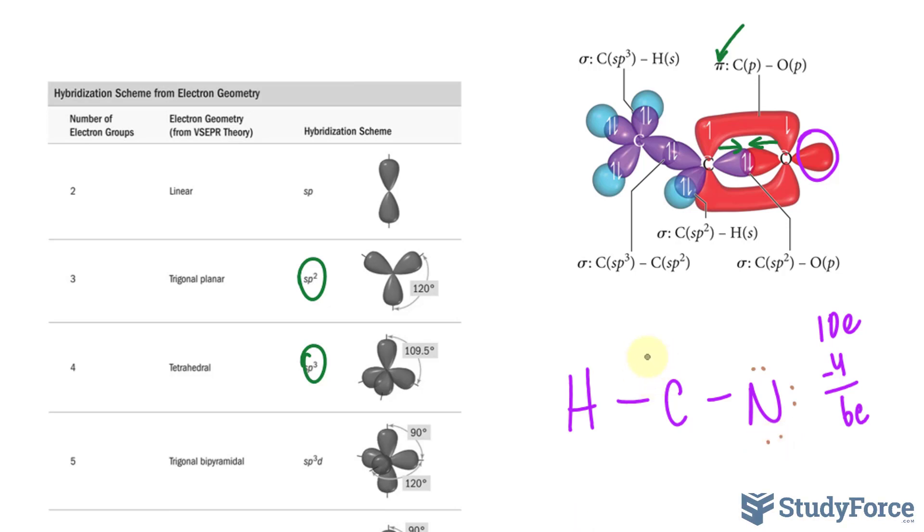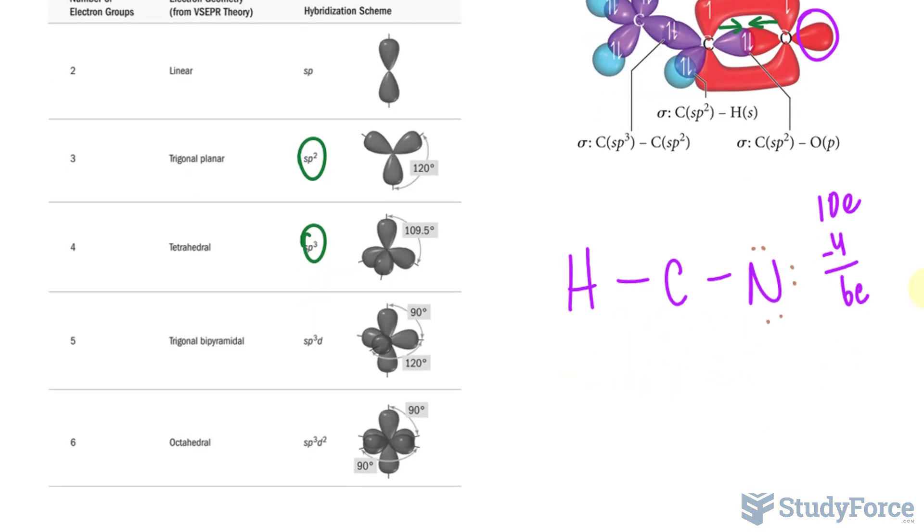Of course, this does not have a complete octet, so we can move these electrons to be shared with C and N, giving us HC triple bonded to N, and we still have that orbital right there with those two electrons. So that's the Lewis structure.